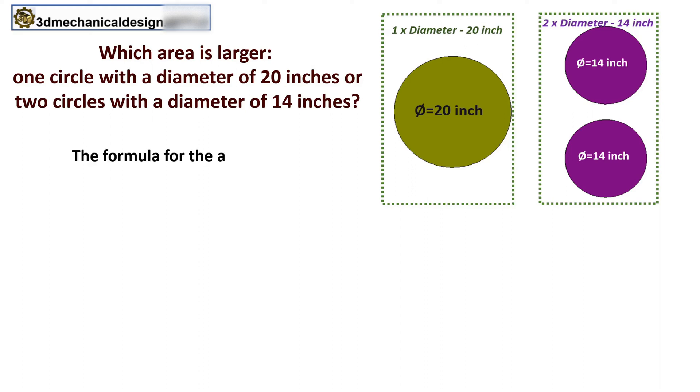The formula for the area of a circle is A = πr², where r is the radius of the circle.